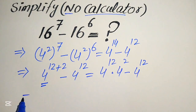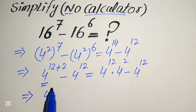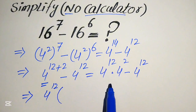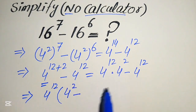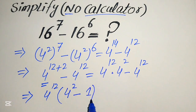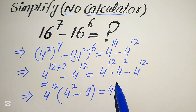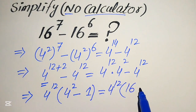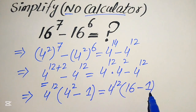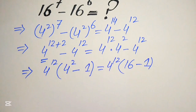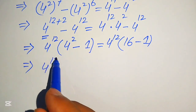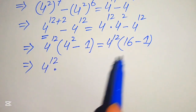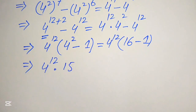Both terms involve 4 to the power of 12, so we factor it out. We get 4 to the power of 12 times (4 squared minus 1), which equals 4 to the power of 12 times (16 minus 1). Since 16 minus 1 equals 15, we have 4 to the power of 12 multiplied by 15.